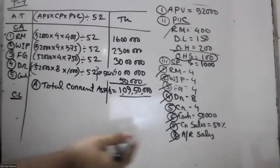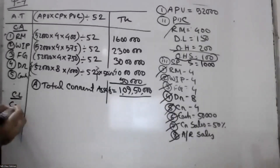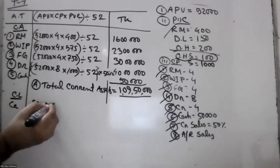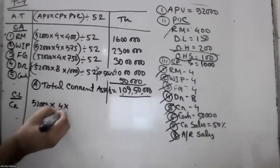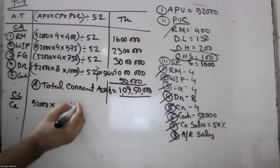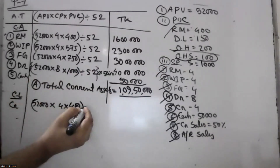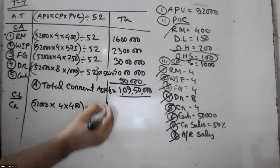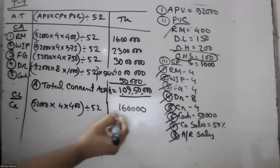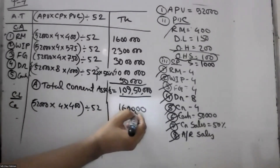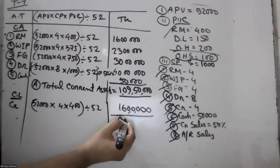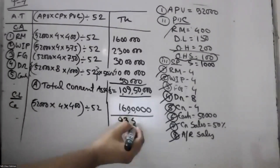Current liability item — creditors: 2,000 and 4,000. Raw material. This is 6,000,000.